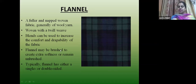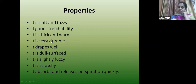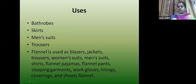Flannel is a woven fabric of wool yarn woven with a twill weave. It may be brushed to give extra thickness. Properties: often soft, good stretchability and warm. Used for men's winter wear shirts. Very durable. Drapes well — used as bathrobes, skirts, bank suits, trousers, blazers and jackets.